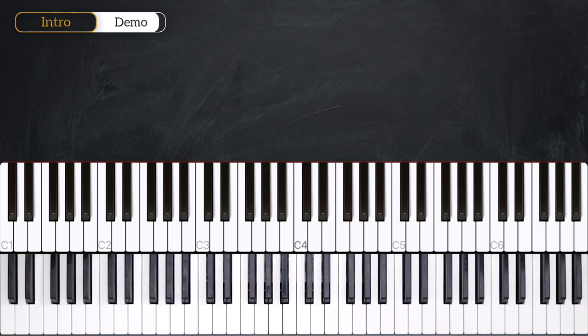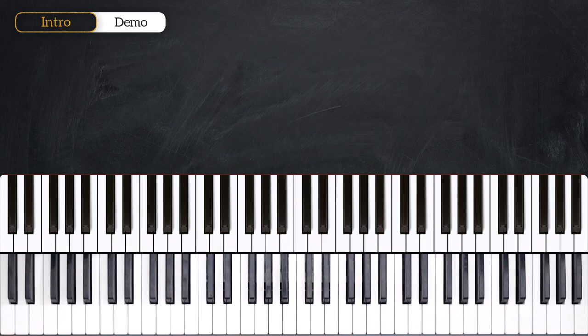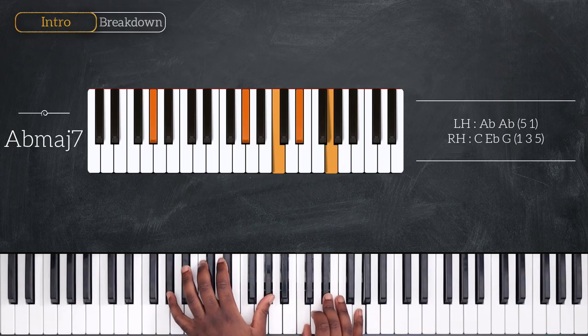Okay, for this first part I'm going to break down the intro of the song. We're playing in the key of Ab, and we're starting with an Ab major 7 chord. With octave Ab on the left, C, Eb and G.